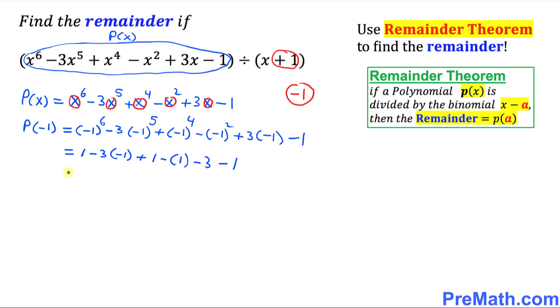Let's simplify furthermore. So one, this negative and negative become positive three plus one minus one minus three minus one. So you can see this positive three, negative one. So this one cancels with this negative one. One cancels with negative one.